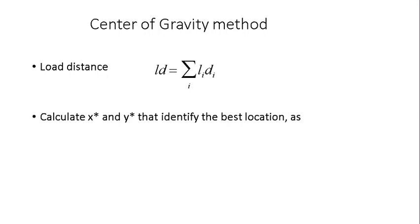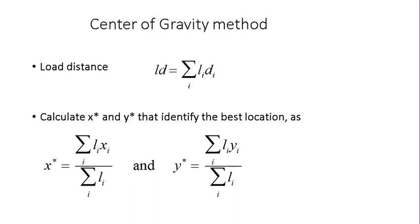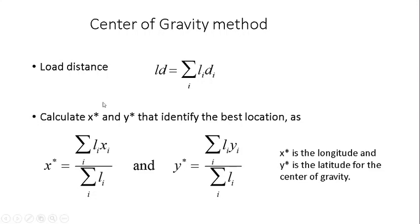Whenever we want to apply this method, what we actually identify is the X star and Y star coordinates. Those two numbers are the longitude and latitude, the ideal coordinates of our location. So it actually resembles to the center of gravity that we are familiar with from science. So in order to find out the ideal location, assuming that we're speaking about a single facility location, finding one only location, then what we're looking for is the X star and Y star.